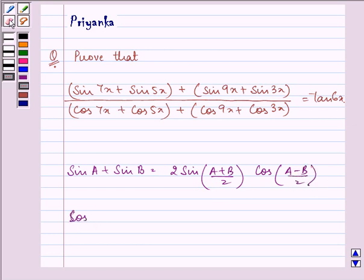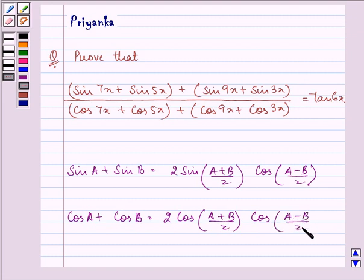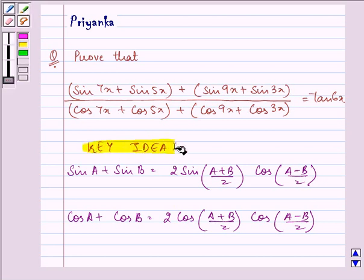Whereas, cos A plus cos B is equal to 2 cos of A plus B over 2 times cos of A minus B over 2. The knowledge of these two identities are the key idea of the question that will help us in proving the above statement.